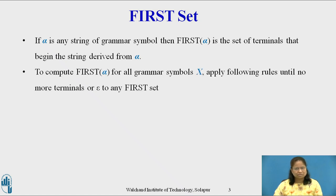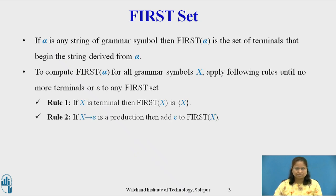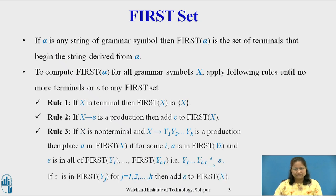To compute First(X) for all grammar symbols X, apply the following rules until no more terminals or epsilon can be added to any First set. Rule 1: If X is a terminal, then First(X) = {X}. Rule 2: If X derives epsilon is a production, then add epsilon to First(X).